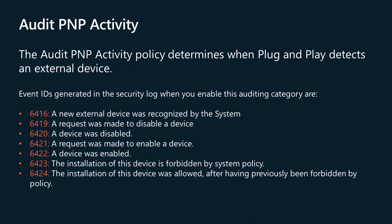The Audit PNP Activity policy determines when plug and play detects an external device. A PNP audit event can be used to track down changes in system hardware and will be logged on the machine where the change took place. For example, when a keyboard is plugged into a computer, a PNP event is triggered.